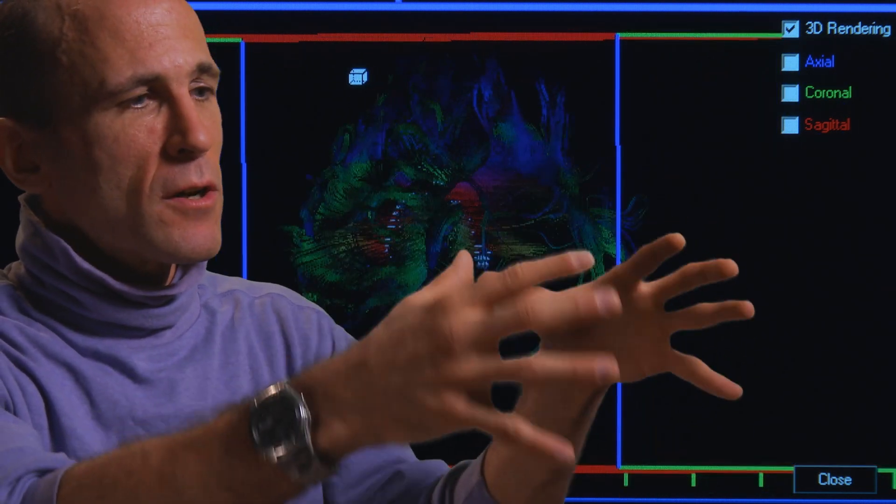Once you get the computer model to look like the human, now you can try different kinds of computer helmets on the computer brain. New cushioning in the helmet. Change the material of the cushioning. Run those same collisions, those same impacts, and see whether you can reduce the stresses that you measure inside the brain.